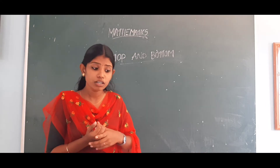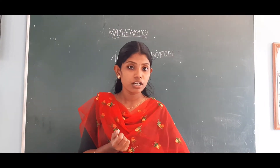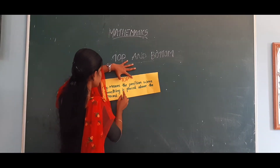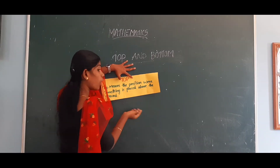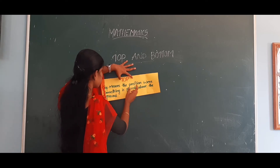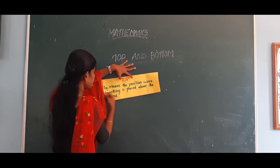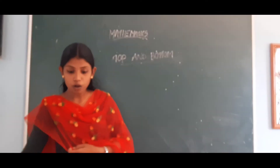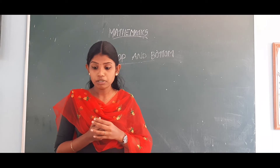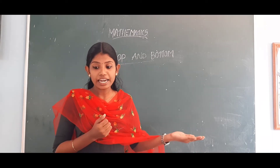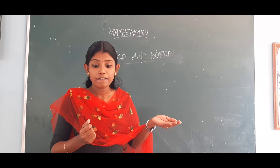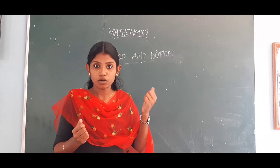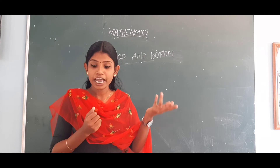What do you mean by top? Top means the position where something is placed above the ground. Ground means floor, land, like that. Something above — that is the top.